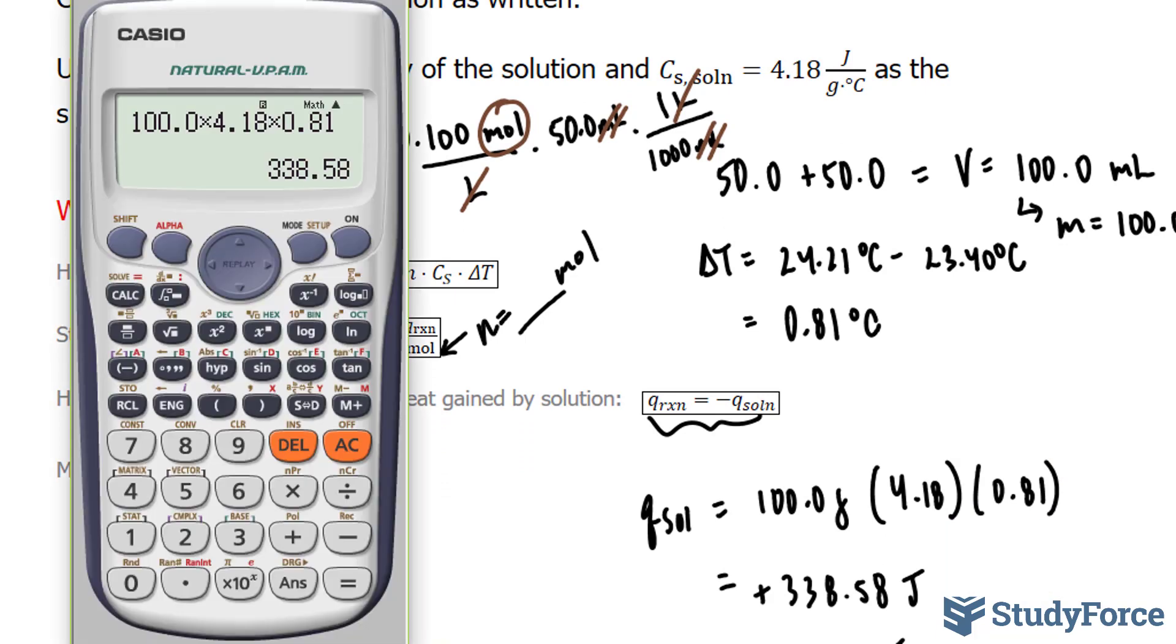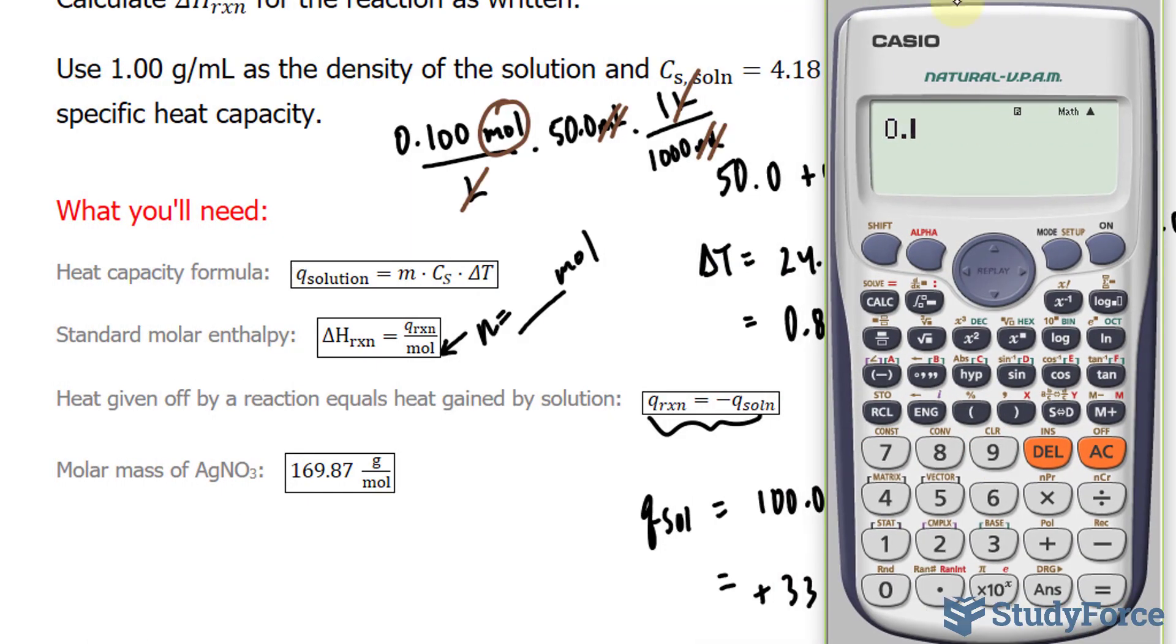Let's figure what that is: 0.100 times 50.0, all divided by 1,000. We get 5 times 10 to the power of negative 3. Remember this number.